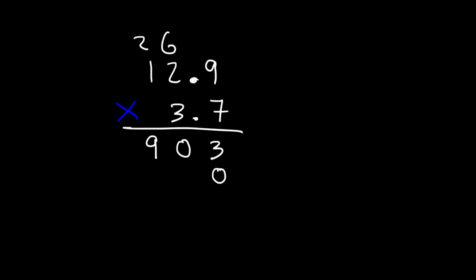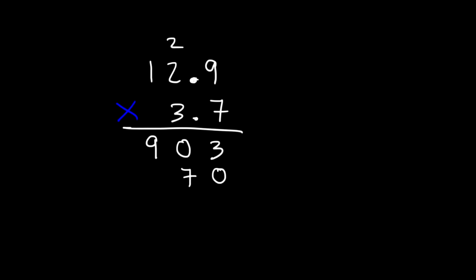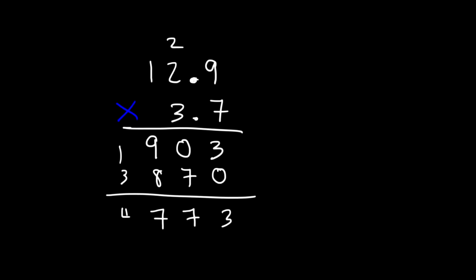Now let's add a 0. So now we're going to multiply 3 times 9. 3 times 9 is 27 — carry over the 2. And then we'll multiply 2 times 3, which is 6 plus 2, that's 8. And then finally, 1 times 3, which is just 3. Now let's add the numbers. 3 plus 0 is 3. 0 plus 7 is 7. 9 plus 8 is 17 — carry over the 1. 3 plus 1 is 4.